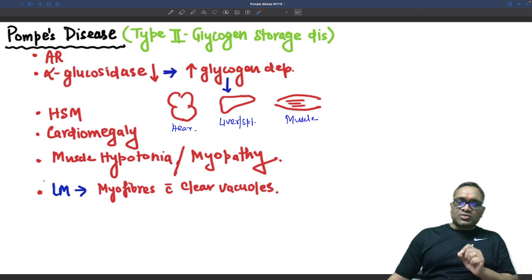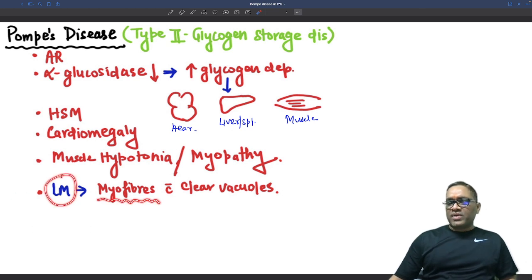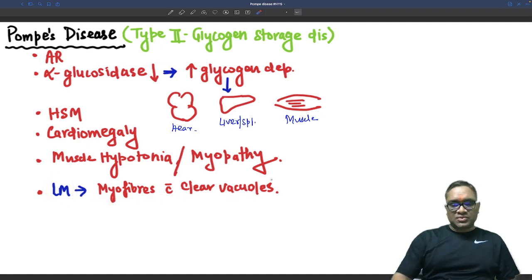What will be the microscopy in this patient? On microscopic examination, you will see myofibers showing clear vacuoles which will be filled with glycogen.